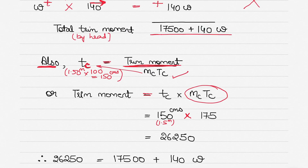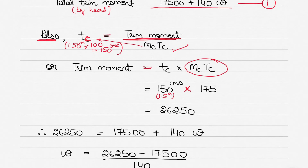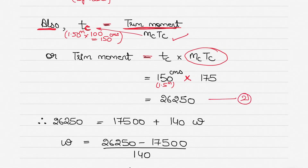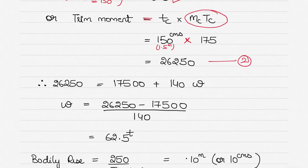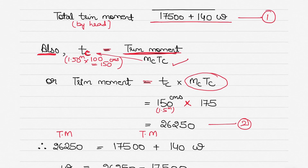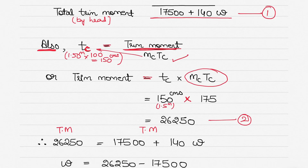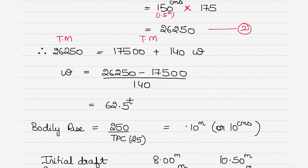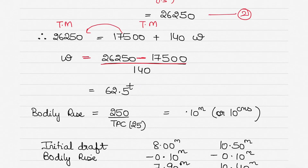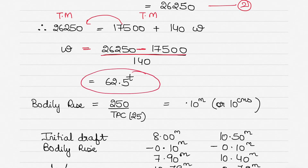Taking the two equations together: 26,250 equals 17,500 plus 140W, since both are expressions for the trimming moment. Solving for W: W equals (26,250 minus 17,500) divided by 140, which gives W equals 62.5 tons. So 62.5 tons of water must be transferred from the aft peak tank to number 1 double bottom tank to achieve the desired trim.